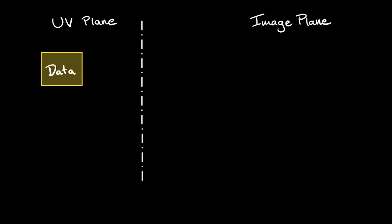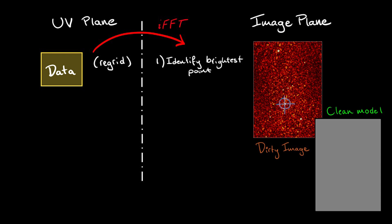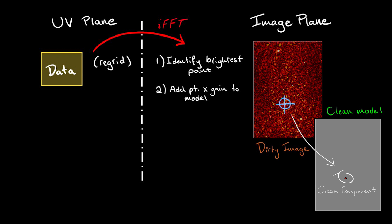After a dirty image is made, the CLEAN algorithm identifies the brightest position in the map and adds a single point source to the model at that location. We refer to this point source as a CLEAN component.